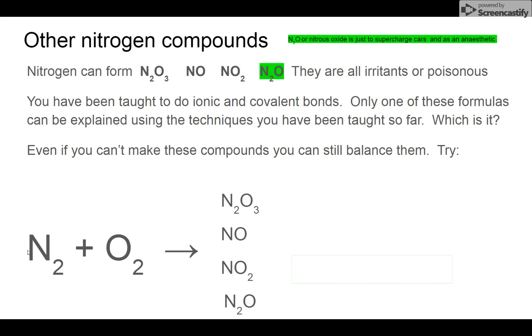Other nitrogen compounds. Nitrogen can form N2O3, NO, NO2, N2O, and so on. They're all irritants or poisonous. N2O, the one in green, that's nitrous oxide at the dentist's office and that's what they put in cars to supercharge them. We'll study this one because it's kind of cool. NO2 is what we're ruining the planet with. You can only make one of these with the Lewis dots that I taught you. Can't make all four, just one. Which one is it? Which three make no sense according to your rules. But you can still balance them. All of them can be triggered by burning nitrogen and oxygen. So how would you balance each equation?